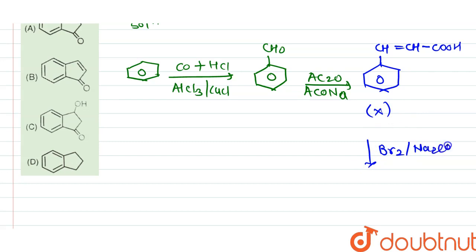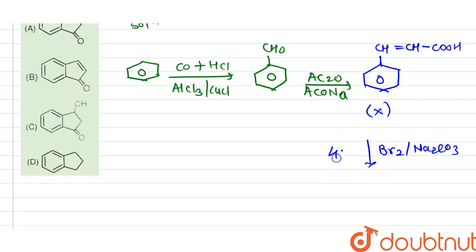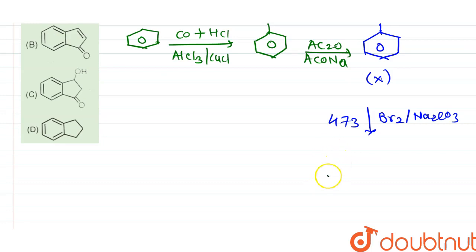After the bromination in presence of Br2/Na2CO3, this gives compound as major product upon reaction with Br2 followed by heating at 473 Kelvin.